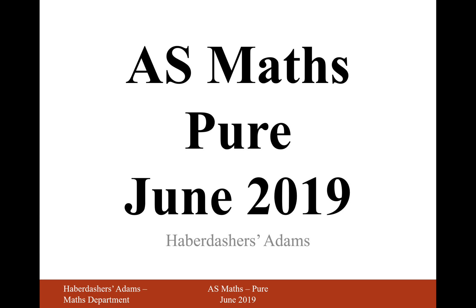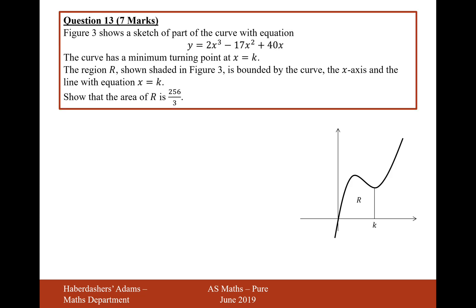Hello there, and welcome to the June 2019 paper. Here we're looking at question 13. Figure 3 shows a sketch of part of the curve with equation y equals 2x cubed minus 17x squared plus 40x.